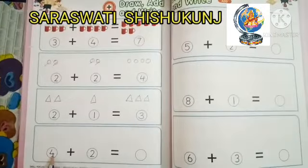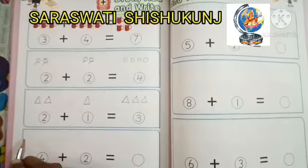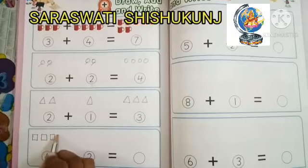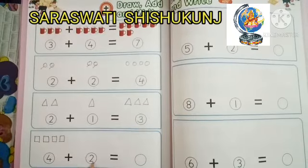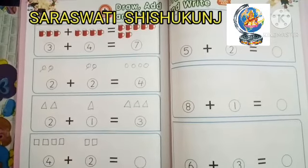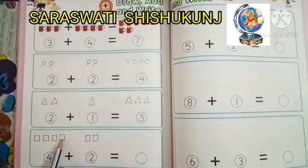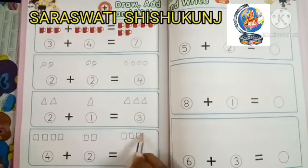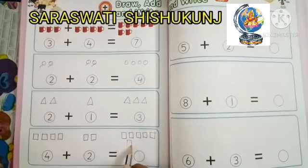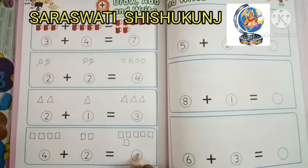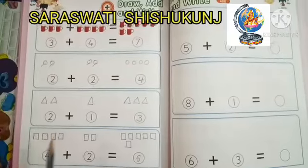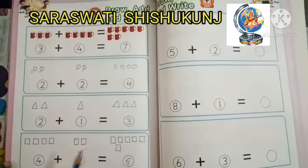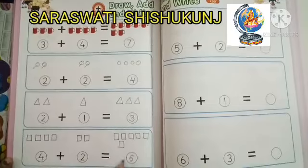Next: four plus two. So one, two, three, four on one side. Then the other side: one and two. Now counting all together — one, two, three, four, then five and six. Four plus two is equal to six. From this way, students, you can draw all the shapes easily, then draw and add and write. Four plus two is equal to six.